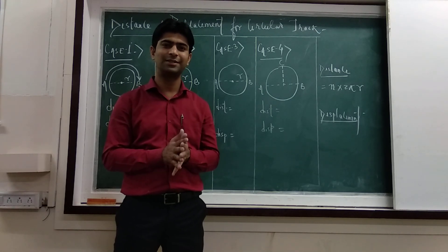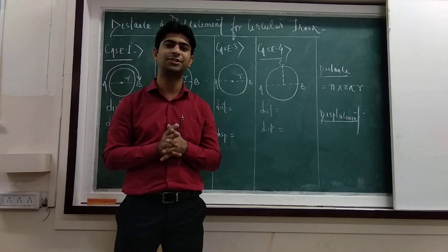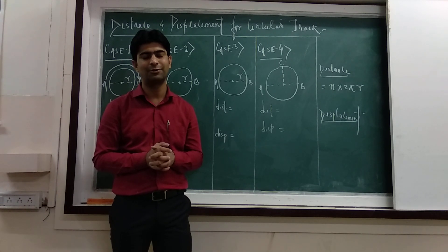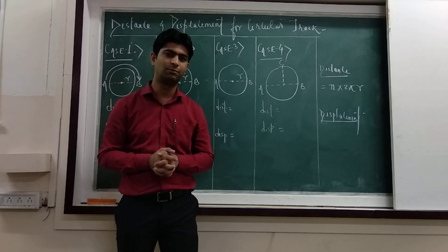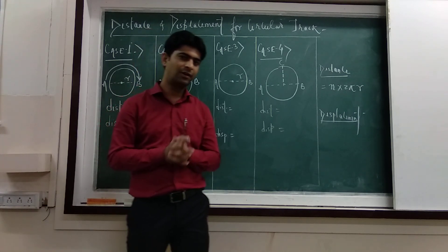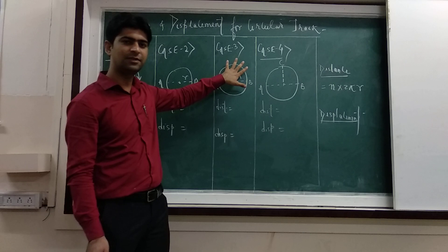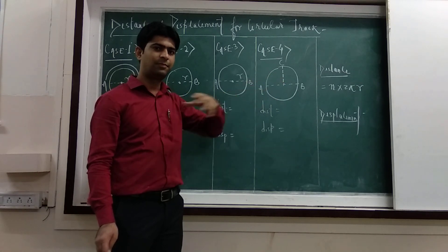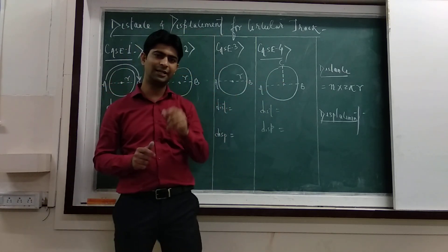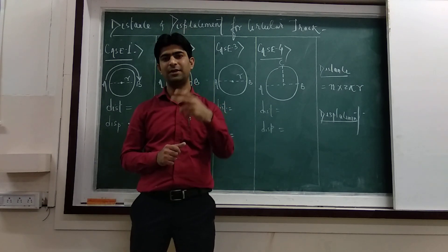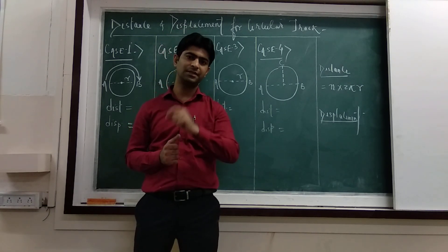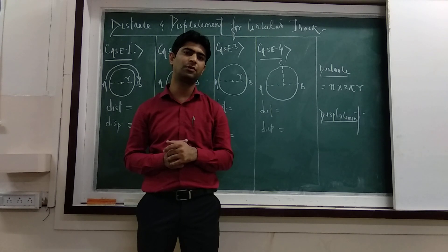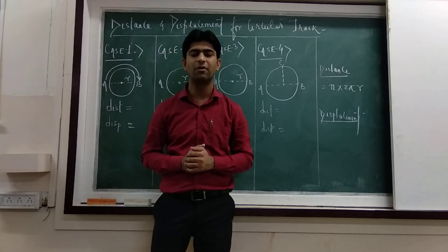Hello friends, this is Yogesh Mukherjee and today we are here with a very interesting lecture on distance and displacement for a circular track, which is part of the chapter on motion in a straight line. We will discuss the calculation of distance and displacement for a circular path for different cases. Distance means the total length of the path covered by the body, whereas displacement is the shortest length of the path between the initial and final position.